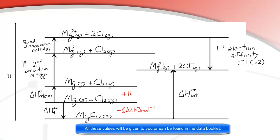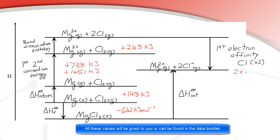Next is the delta H of atomization — that's endothermic, because it takes energy to make magnesium from a solid to a gas — that's plus 148 kJ. The first ionization energy is positive, so endothermic: 738 kJ. The second ionization energy is 1,451 kJ. Next, we break the bond between the two chlorine atoms — again endothermic — requiring 243 kJ. Then the arrow goes down, so we're into negative values, exothermic: 2 times the electron affinity, which is negative 349 kJ.